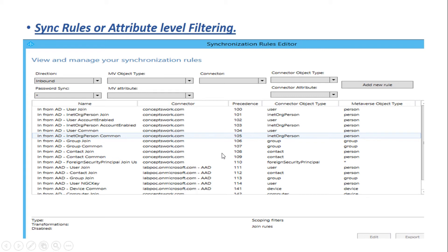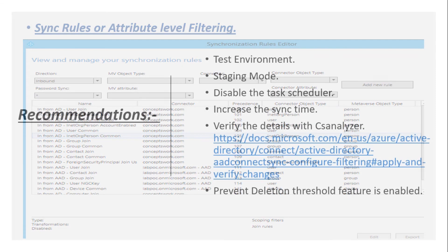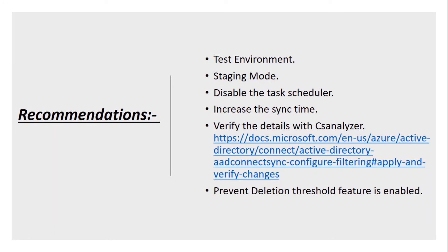From the Synchronization Rule Editor console you can also create new rules — I will be covering that in another video. This is just a brief overview of how to get to this point. Since this is applied at the attribute level, you can choose one attribute with one specific value, or add multiple attributes with multiple values in permutation and combination for different situations, all attached to one single sync rule to get the desired results.